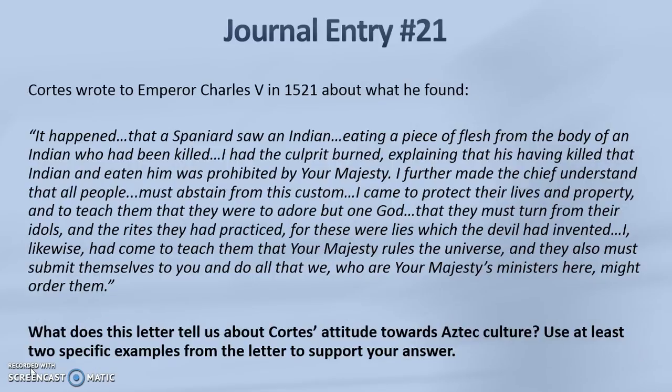For journal entry number 21 we are going to analyze this letter that Cortes wrote to Emperor Charles V in 1521 about what he found in the New World. It says: 'It happened that a Spaniard saw an Indian eating a piece of flesh from the body of an Indian who had been killed. I had the culprit burned, explaining that his having killed that Indian and eaten him was prohibited by your majesty. I further made the chief understand that all people must abstain from this custom. I came to protect their lives and property and to teach them that they were to adore but one God, that they must turn from their idols and the rites that they had practiced, for these were lies which the devil had invented. I likewise had come to teach them that your majesty rules the universe and they also must submit themselves to you and do all that we who are your majesty's ministers here might order them.'